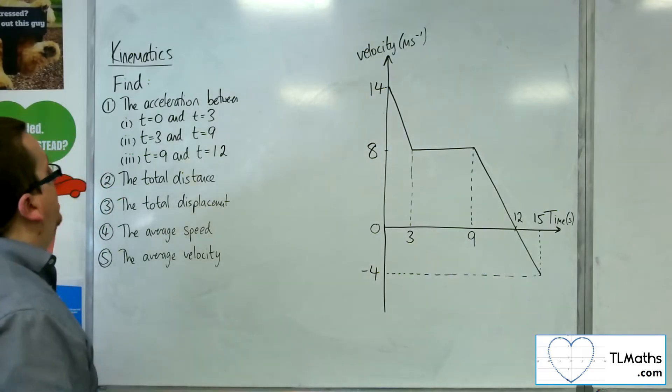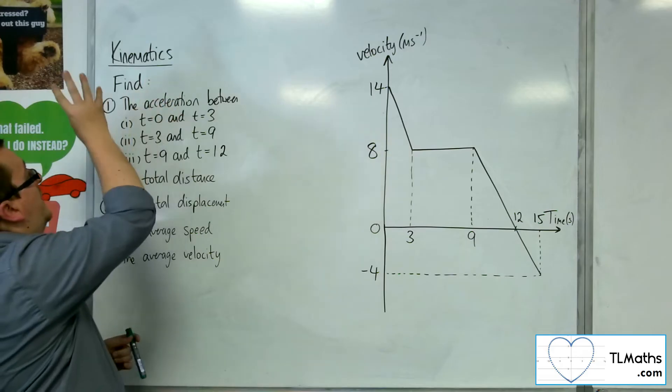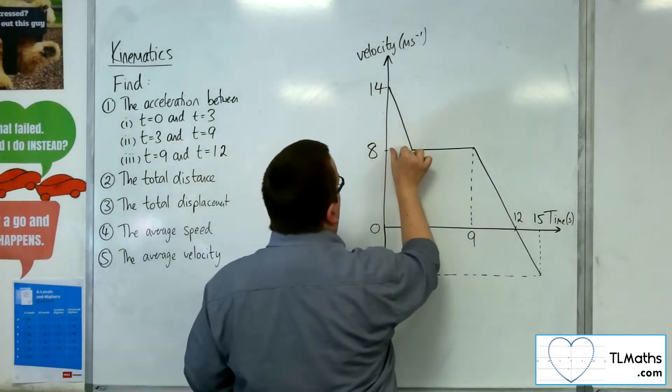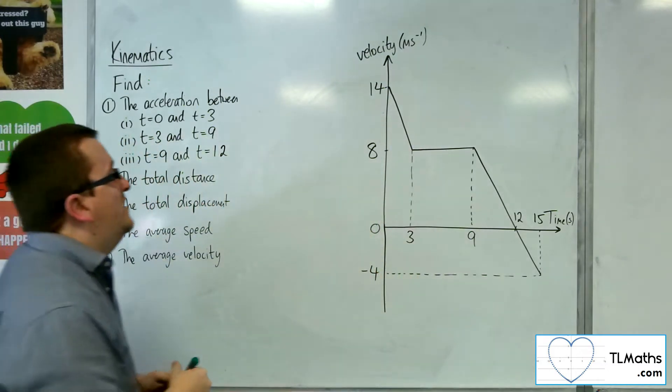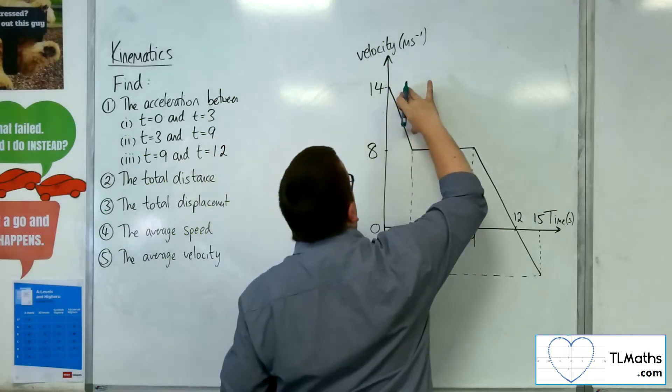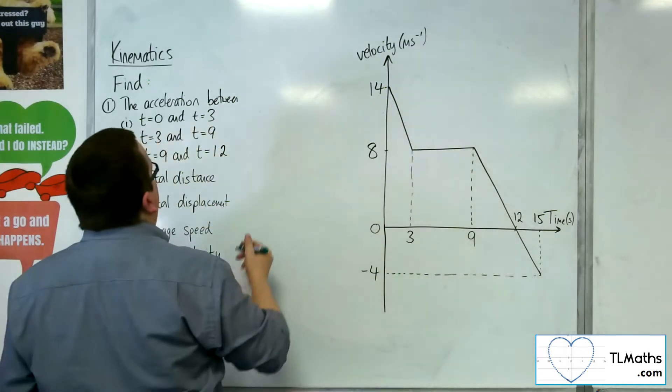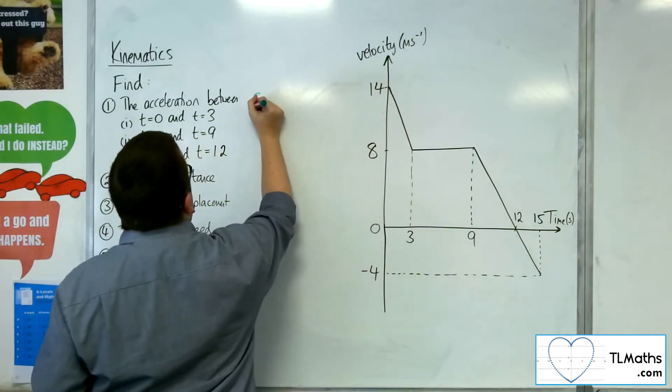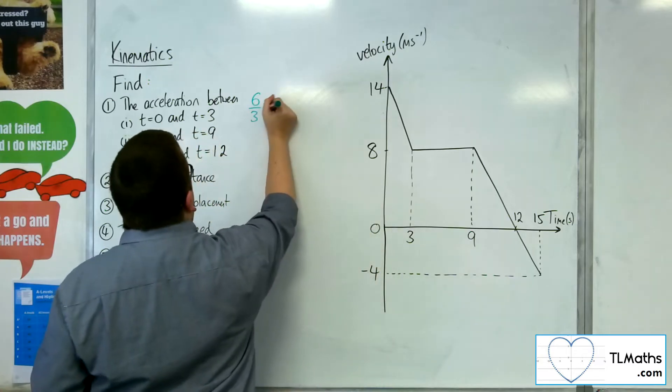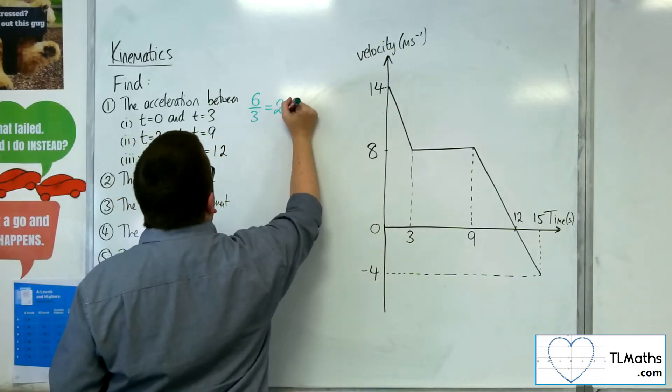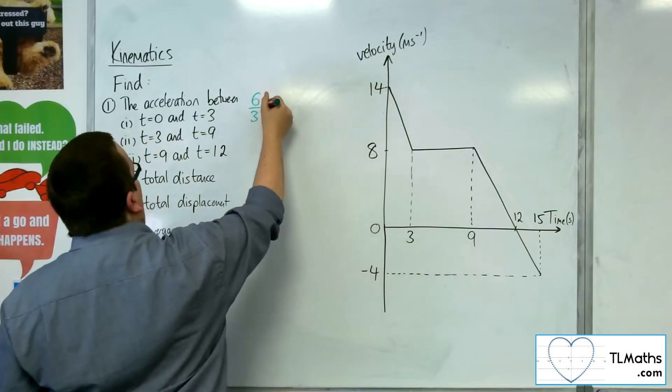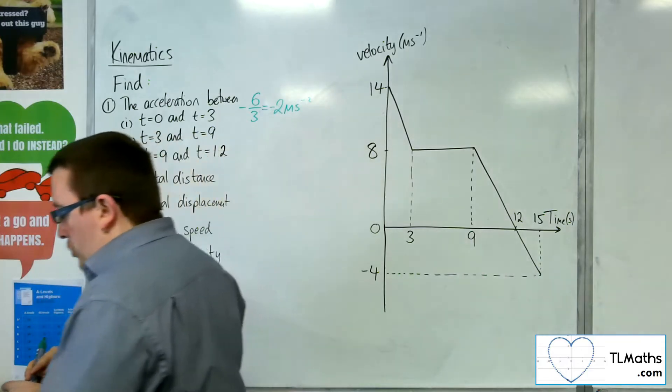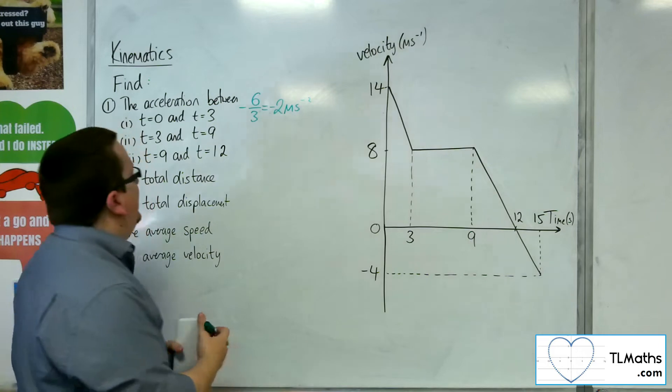So let's see if we can answer some of these questions. For the first one, we're looking at find the acceleration between T is 0 and T is 3. So for the first 3 seconds of motion, what is the acceleration? It is the gradient of that line. So we've got the difference in the y-coordinate, so 14 take away 8 is 6, so we'd have 6 over 3. So that would be 2 metres per second per second, but because we're going downwards, we're looking at a negative acceleration. So it's minus 2 metres per second per second, this deceleration.